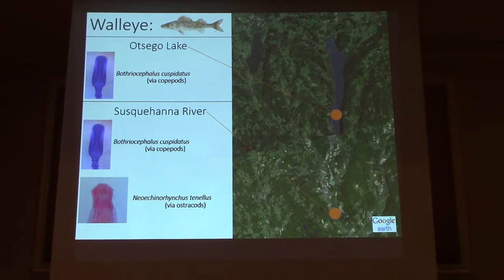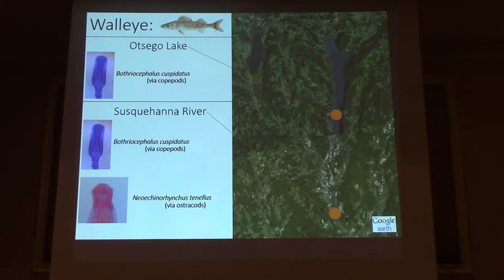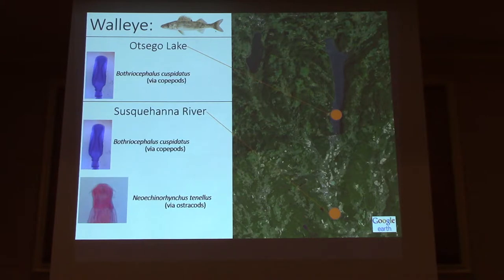The acanthocephalan Neopanericus tenellis is more host-specific — fish acquire it via ostracods. We've looked at 1,600 individual fish of 44 species, so we can make statements about what is or is not in the lake. This worm is not in the lake. Most of the walleye population is from stocking, and either that worm was never established or populations were too low to retain the cycle. When we go to the Susquehanna River nearby, we do find Neopanericus tenellis.